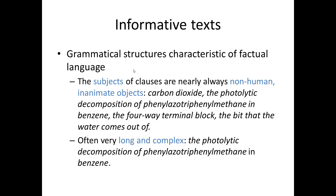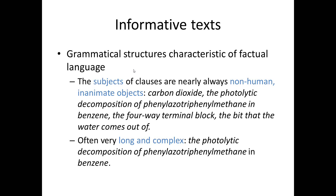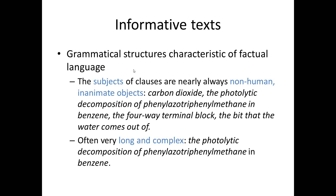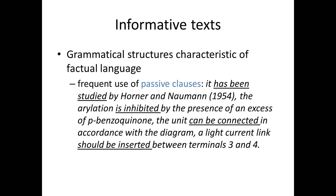In addition to the specialised vocabulary, we can see from these texts that there are certain types of grammatical structures that are characteristic of factual language, and especially of scientific language. The subjects of the clauses are nearly always non-human inanimate objects, like 'carbon dioxide', 'the photolytic decomposition of phenyl-azotriphenylmethane in benzene', 'the four-way terminal block', or even 'the bit that the water comes out of'. They are also often very long and complex. As we've already seen, passive clauses are very frequent in scientific language — for example, 'it has been studied by Horner and Naum in 1954' or 'the arylation is inhibited by the presence of an excess of p-benzoquinone'.